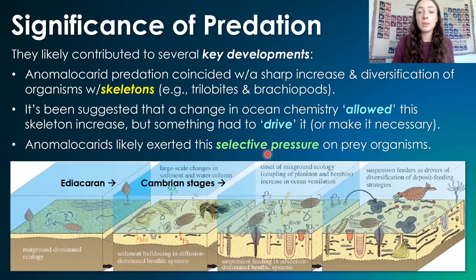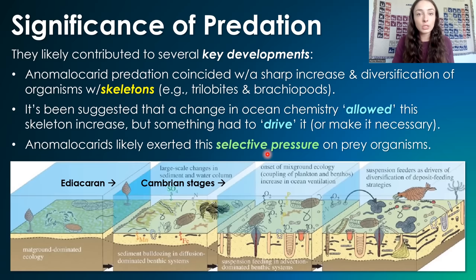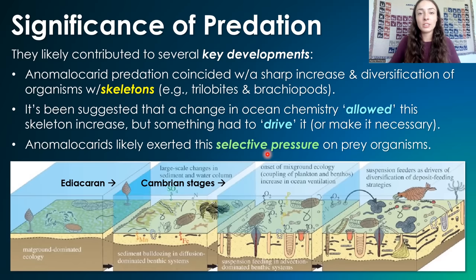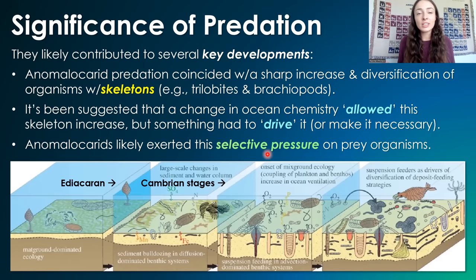This driver was likely anomalocaridids and their selective pressure, making prey organisms evolve defense mechanisms like skeletons. This likely played a huge role in causing what we think of as the Cambrian explosion — that fossil record that just explodes with hard-parts-secreting life right during this period.